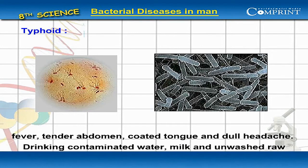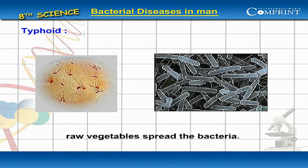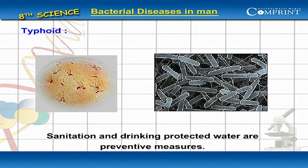Drinking contaminated water, milk and unwashed raw vegetables spread the bacteria. Sanitation and drinking protected water are preventive measures.